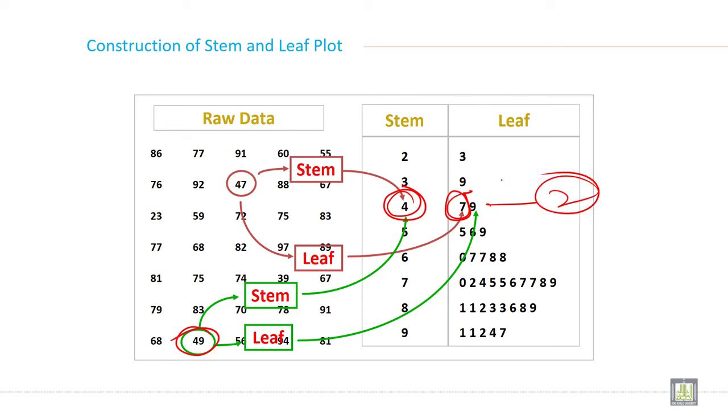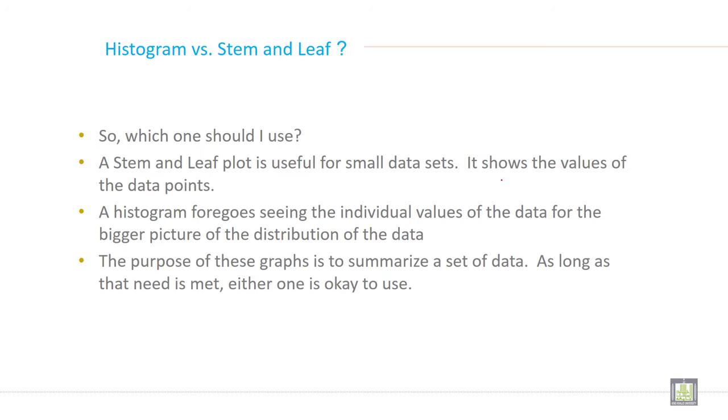Now the question is whether you make a histogram or stem and leaf plot, which one is better, for which type of data? Which one should I use? A stem and leaf plot is useful for a small data set. It shows the value of the data points, but a histogram foregoes seeing the individual value of the data for the bigger picture of the distribution of the data.